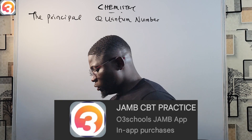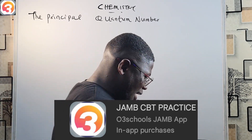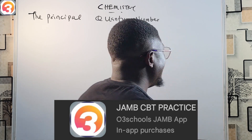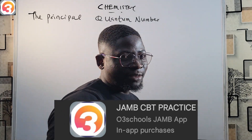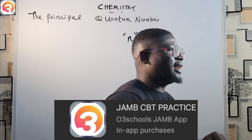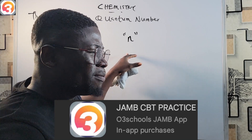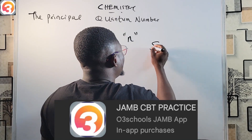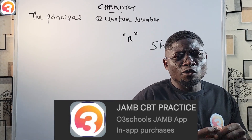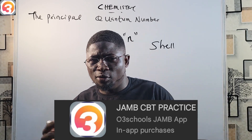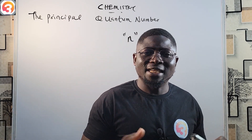The principal quantum number is abbreviated with the letter n. The principal quantum number gives the information of the shell to which an element belongs. So if you want to know the shell to which an element belongs, the principal quantum number is very important in that regard.